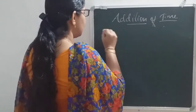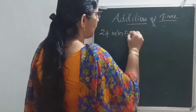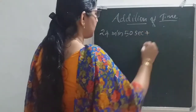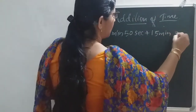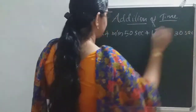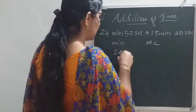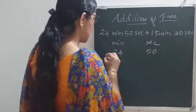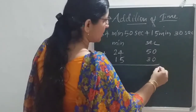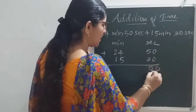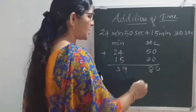One more example: 24 minutes 50 seconds plus 50 minutes 30 seconds. First write minutes and seconds: 24 minutes 50 seconds plus 50 minutes 30 seconds. 0 plus 0 is 0, 5 plus 3 is 8, 4 plus 0 is 4 — wait, working column by column: we get 74 minutes 80 seconds. But 80 seconds is more than 60.